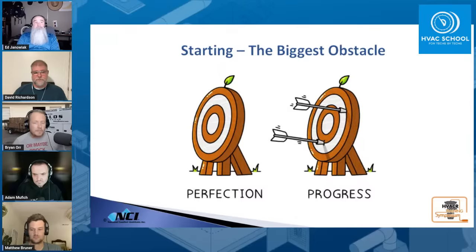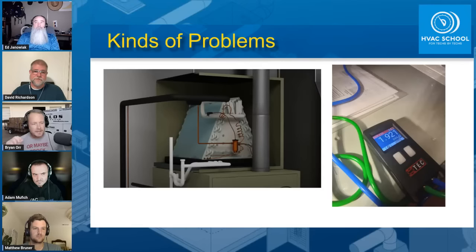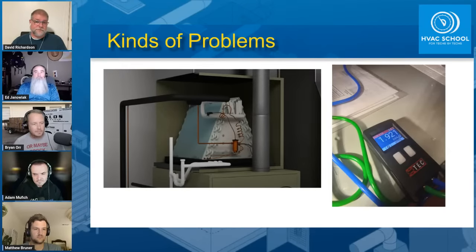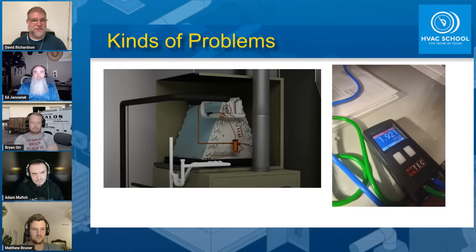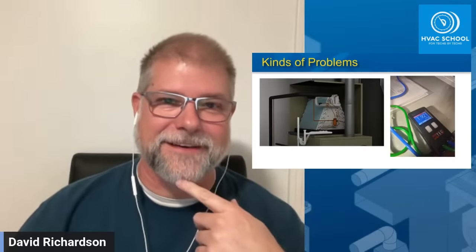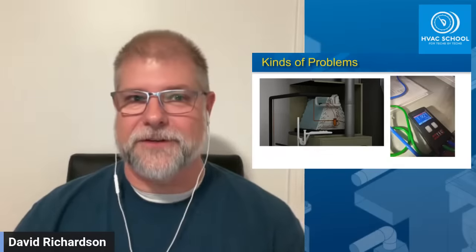When looking for indicators of potential problems, a lot of people want to jump straight to measurements. But measurements should verify what you already know. Ed mentioned Manual D — if you follow those principles and look at fittings, you can see right away what's right or wrong. It always starts with the visual inspection: take the doors off the equipment and look at it. You can identify a lot without test instruments, but you do need instruments to quantify it — otherwise, it's just opinion.